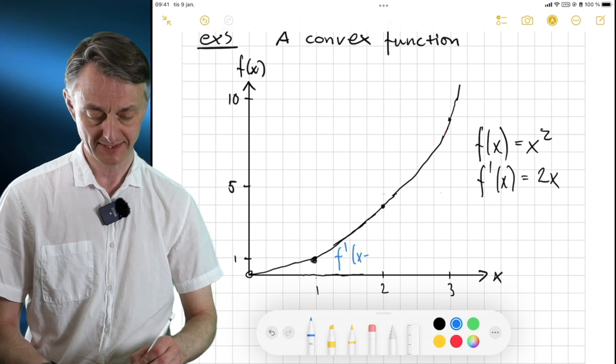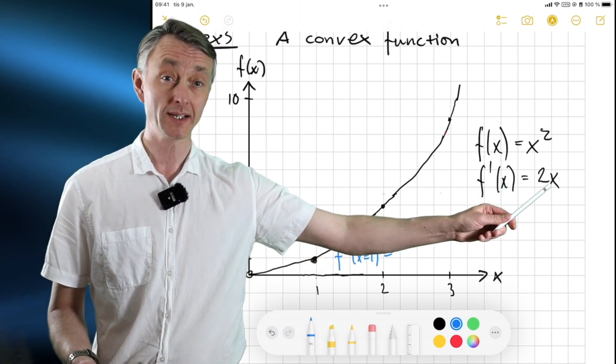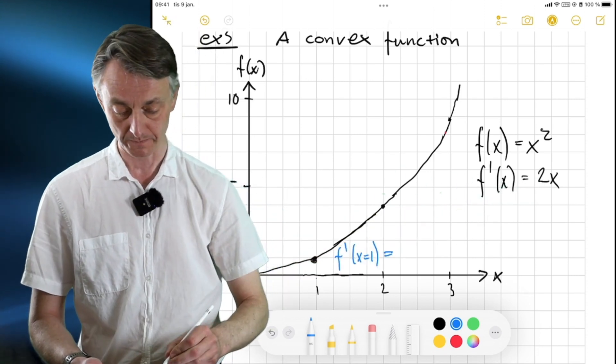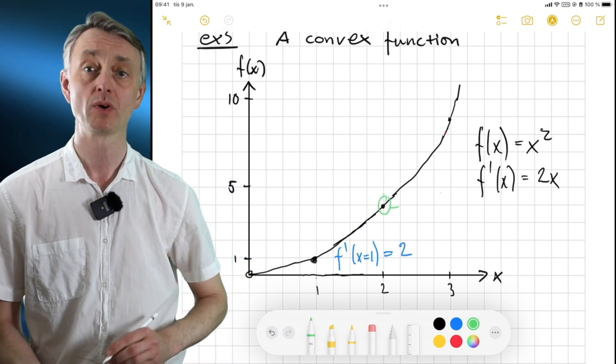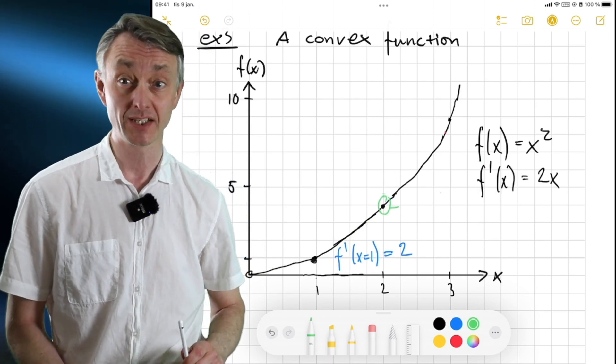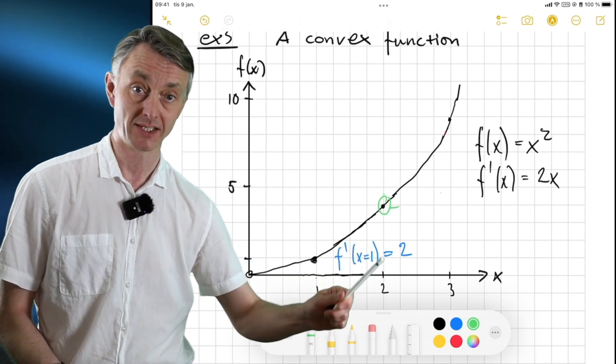So, f prime when x equals 1, we plug in a 1 here. So, the slope is going to be 2. Now, we can continue and see what is then the value of the derivative, i.e. the slope, at the point where x is equal to 2 here.